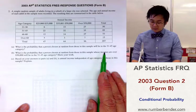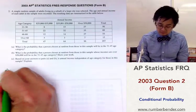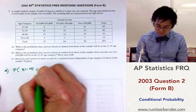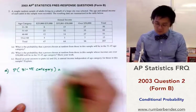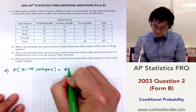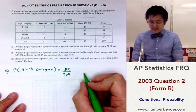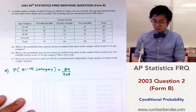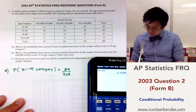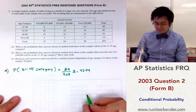We're supposed to find the probability that a person selected will be in the 31 to 45 age group category. There are 89 people in this category out of a total sample space of 207. So 89 divided by 207 is 0.4299, or about 43%.